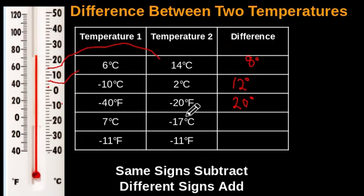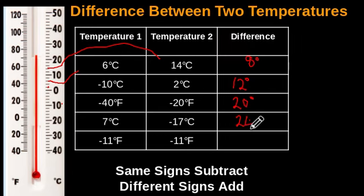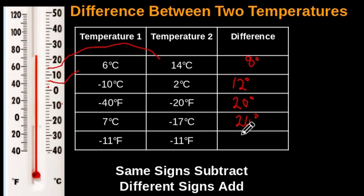The next row, we have 7 degrees Celsius and negative 17 degrees Celsius. Positive temperature and negative temperature — different signs, so add. Seven plus 17, that's 24 degrees as the difference. And the last row, we have negative 11 degrees Fahrenheit and negative 11 degrees Fahrenheit — it's the same temperature, so the difference is zero degrees. And if you subtract: same sign, 11 minus 11 still gives you zero.